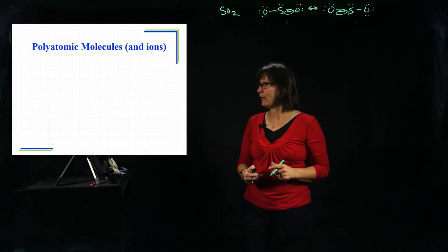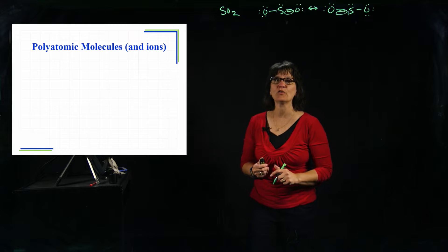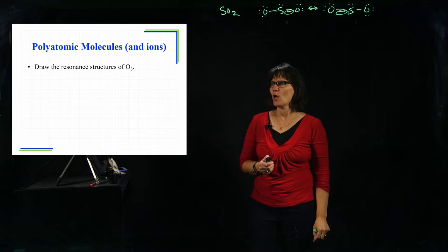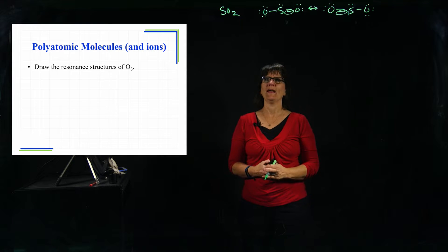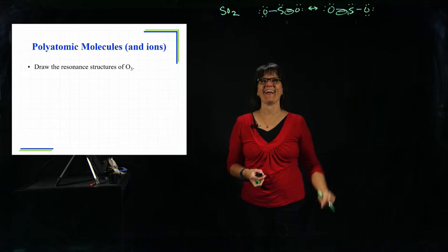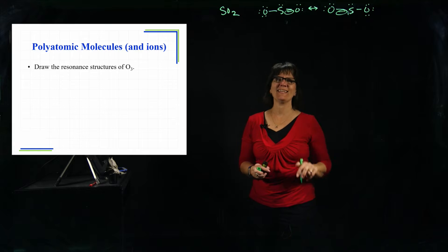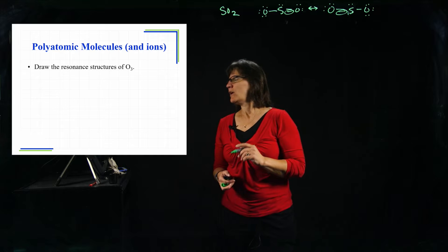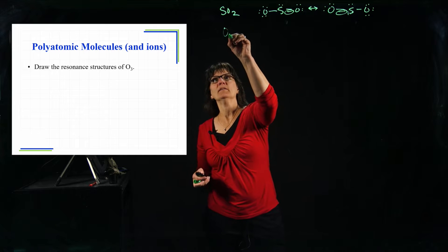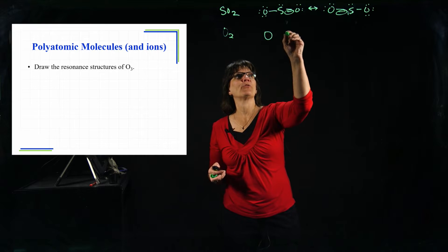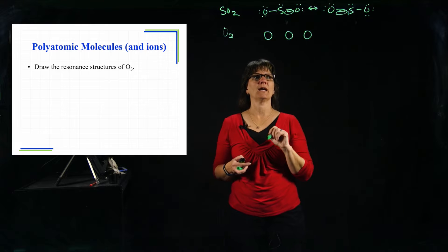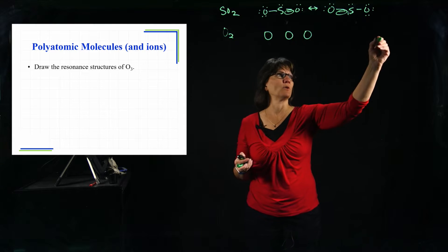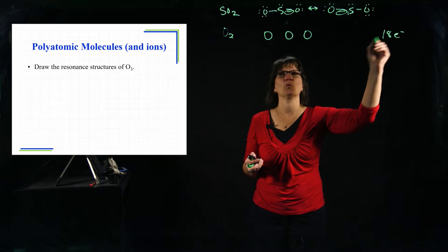Now for our example, and you can do this for polyatomic ions or polyatomic molecules, we're going to focus on O3. Now O3 is just like SO2, but we'd seen that structure before so that's why I chose it. For O3, now we have three oxygen atoms, we have the same number of valence electrons, six times three, we have 18 electrons to work with.